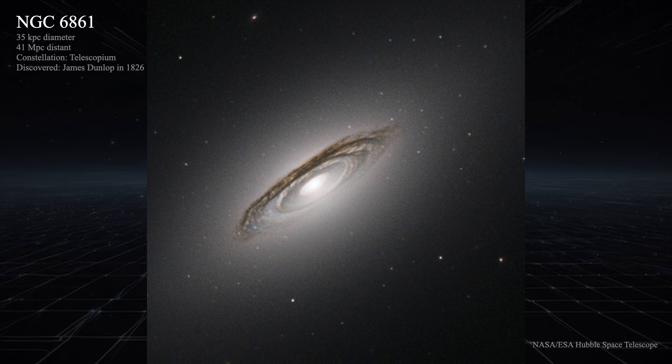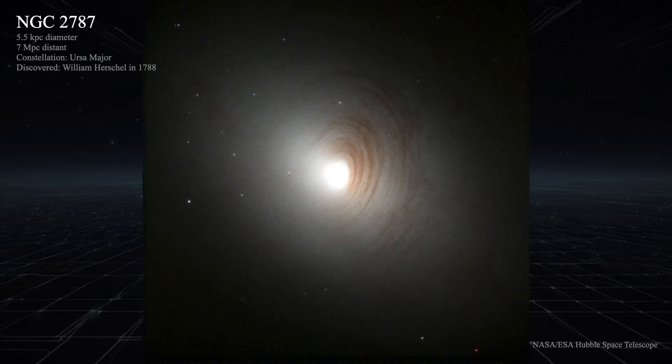Lenticular galaxies are subdivided into classes based on how much dust they have and whether or not they have a bar, creating sub-designations such as S01, S02, and S03 for those without a bar, and SB01, SB02, and SB03 for those with a bar. I'm really not going to go into those differences — that's for a much deeper course in galactic dynamics.